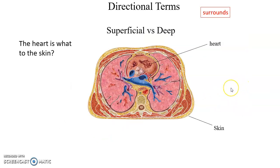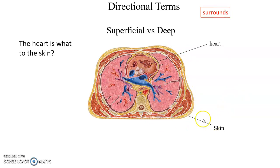We also have the terms superficial and deep. This is usually used when layers or structures surround each other. For instance, we have the skin on the surface and the heart inside the body. The heart is deep to the skin — further away from the surface. The skin is superficial to the heart — closer to the surface.